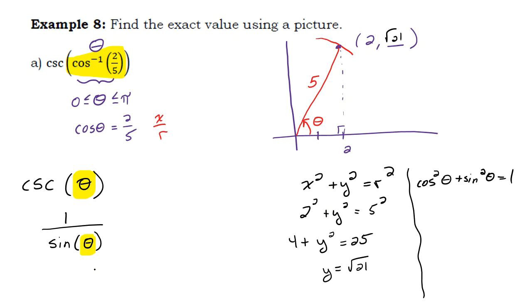So the sine of this angle in this picture right here is y over r. So the sine is root 21 over 5, and one over that then would just flip over to five over root 21. Okay, that's a perfectly good answer. If you wanted to rationalize that answer, you certainly could. A lot of programs require that. So then you would end up with five root 21 over 21.